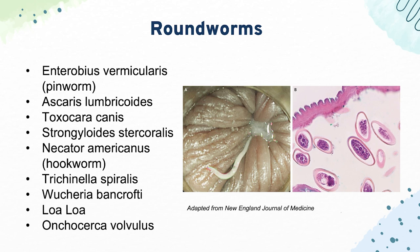Then we have Strongyloides stercoralis, which causes GI, pulmonary, and cutaneous symptoms and can also cause auto-infection — unique to that disease. It's treated with ivermectin. Then we have Necator americanus, which is hookworm. That causes cutaneous larva migrans — you can see a serpiginous rash under the skin — and it comes from walking on contaminated soil.